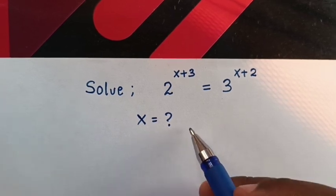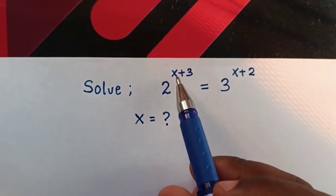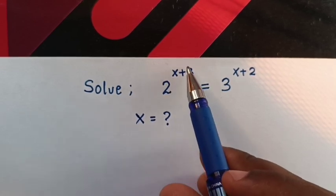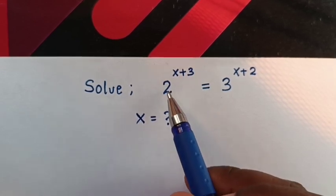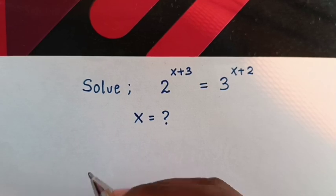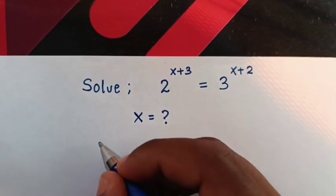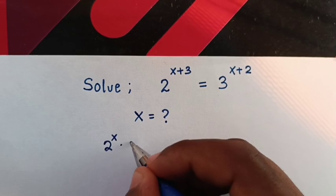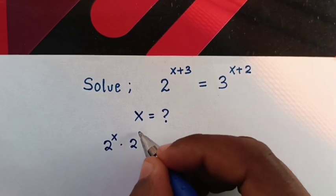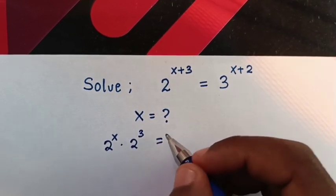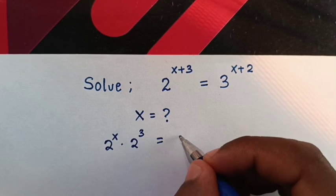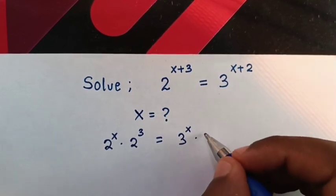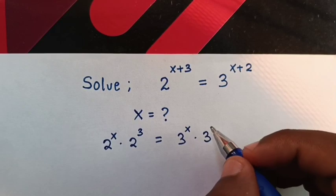From here, 2 power x plus 3 — this power x plus 3 is the same as multiplication of exponents. It will be 2 power x times 2 power 3, is equal to, by the same multiplication of exponents rule, 3 power x times 3 power 2.